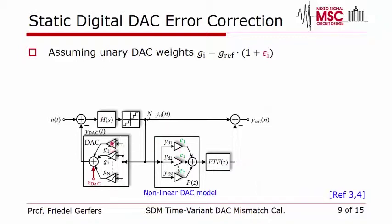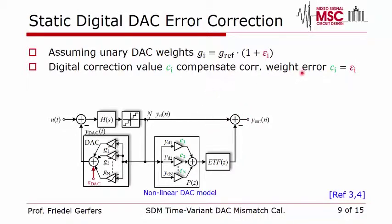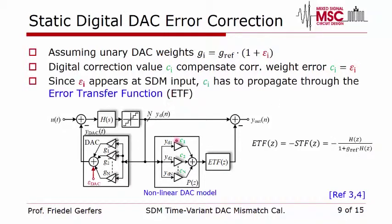The correction works by modeling the errors from the current sources with matched coefficients C_1 through C_n. By calculating these C_n values and multiplying them by the transfer function, we can correct the output at the Sigma-Delta output. The goal is to match the digital model to the actual errors, and we can show that the error transfer function from epsilon to the final output is actually the signal transfer function with a negative sign due to negative feedback, allowing state-of-the-art correction of static errors.